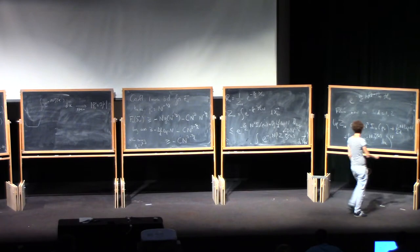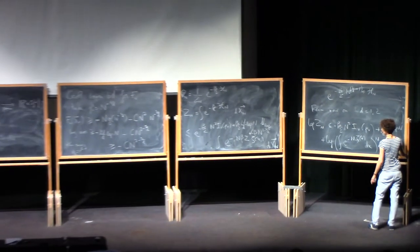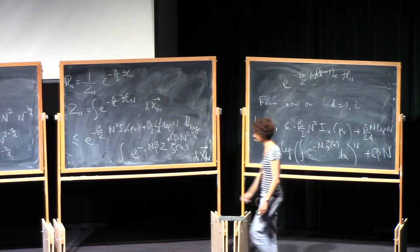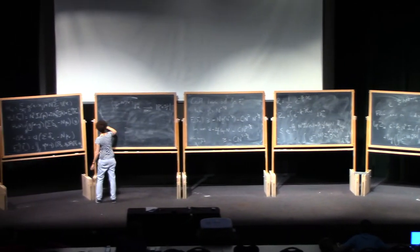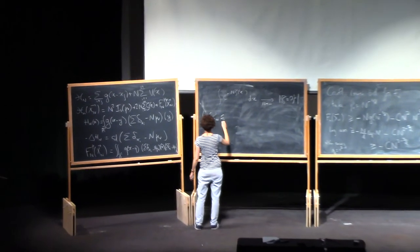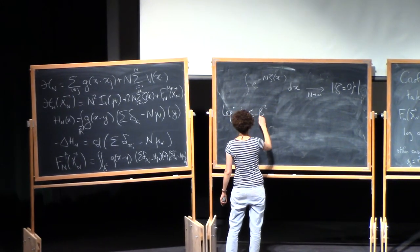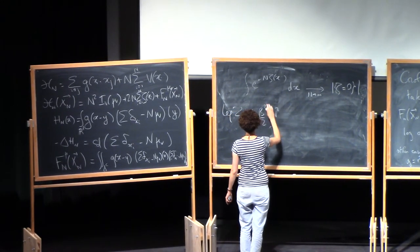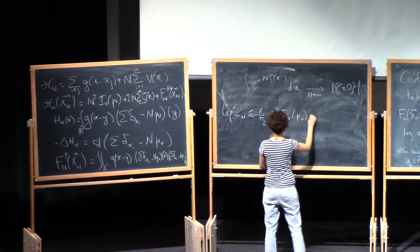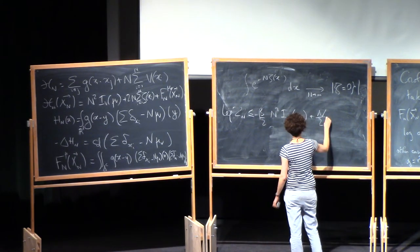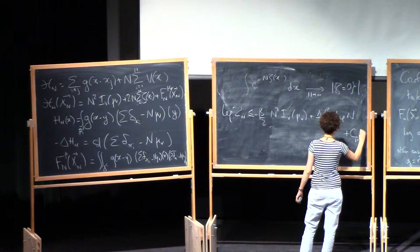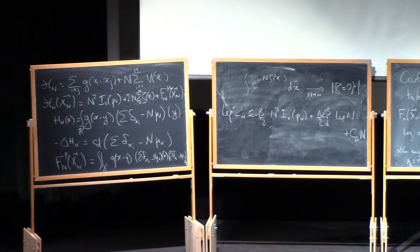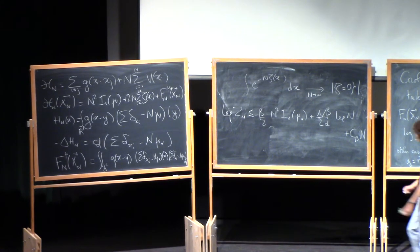And so when you take the log to the power n of this, this is going to give you a term of order n. Of course, I had forgotten some terms here. So I have a c beta n, essentially. So this goes into the order n term and we have concluded a bound from above of the partition function.